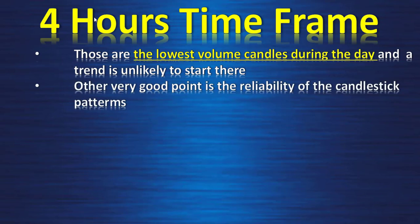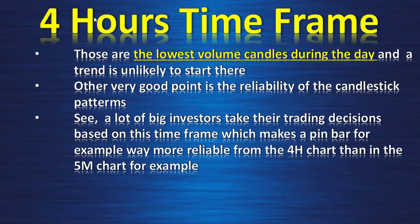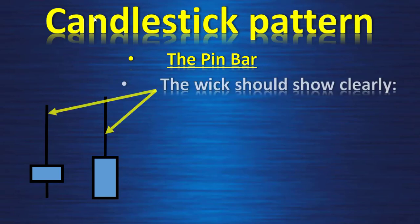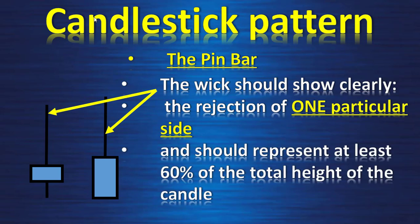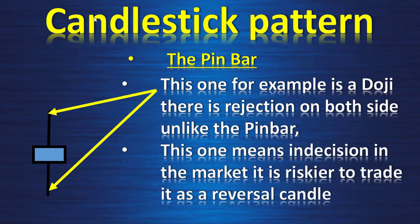A very good point is the reliability of candlestick patterns on the four-hour time frame — a lot of big investors take their trading decisions based on this time frame, which makes a pin bar, for example, far more reliable on the four-hour chart than on a five-minute chart. We will focus on three reliable candlestick formations: the pin bar, the railroad track, and the engulfing candle. For the pin bar, the wick should clearly show rejection of one particular side — not both — and should represent at least 60% of the total height of the candle.